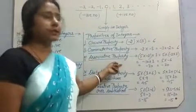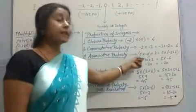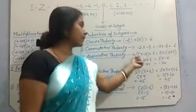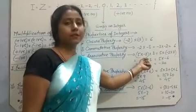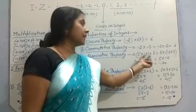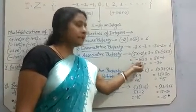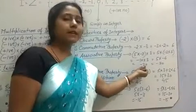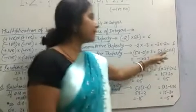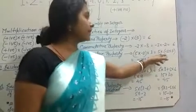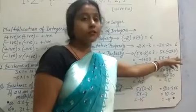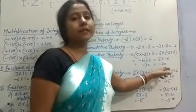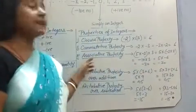The third is the associative property. If we take three integers and group them like this: 5 into minus 2 together, then solve — it is minus 10 into 3, which gives minus 30. If we instead take minus 2 and 3 together, it also gives minus 30.